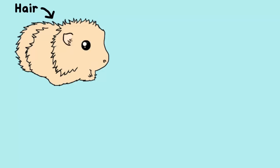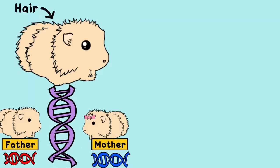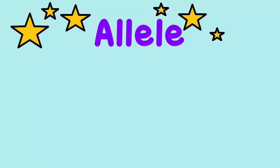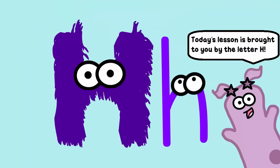Most guinea pigs have hair. This is because of their DNA. DNA makes up genes, and guinea pigs received genes from both their mother and their father. An allele is a form of a gene and is often represented by a letter. In this case, we'll use the letter H for hair.